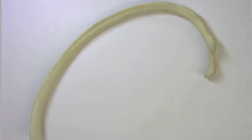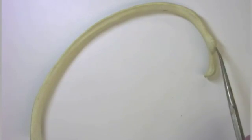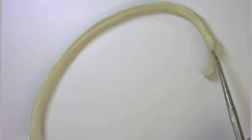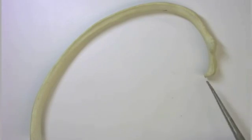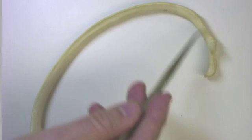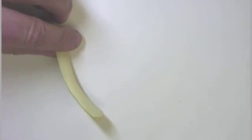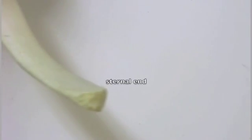The rib spins around like this making a C. Here's a disarticulated rib, and we can see the head of the rib, the neck of the rib, and the tubercle of the rib. Recall that the tubercle articulates with the transverse process of the thoracic vertebrae, and the head articulates with the body of the thoracic vertebrae. The rib spins around making a C — remember a clavicle would make more of an S. This end is referred to as the sternal end, which attaches to the costal cartilages of the sternum.